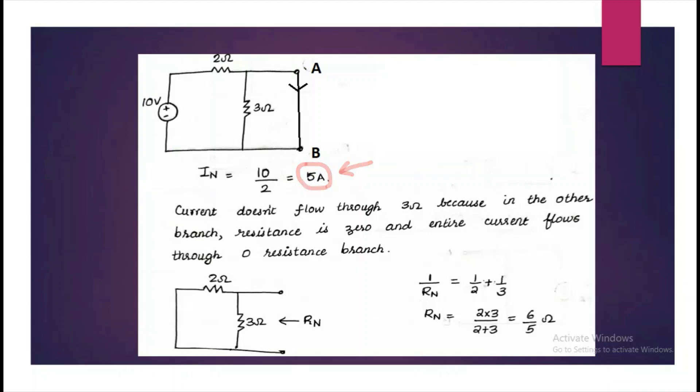Now we have to find the equivalent resistance. So short circuit the voltage source. If it had been a current source, we have to open circuit it.